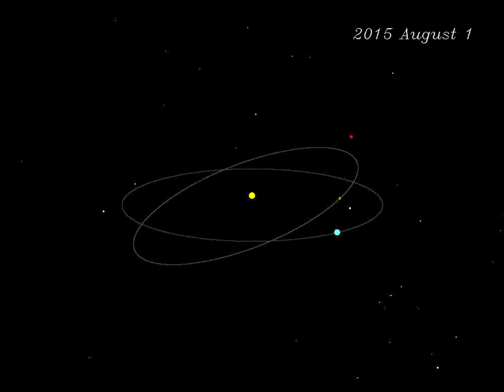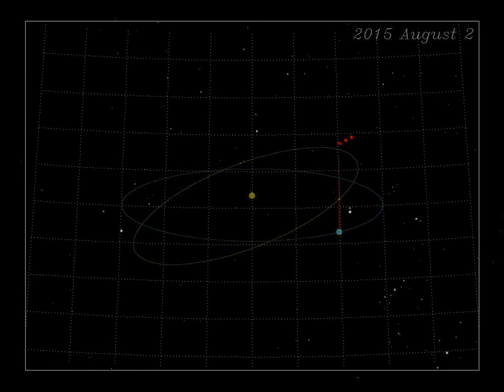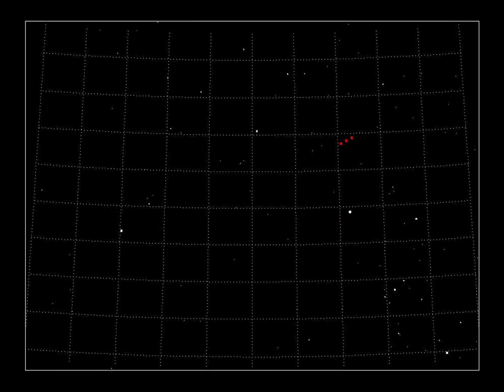By the next day, both objects will have moved along their orbits, putting the asteroid in a slightly different position on the sky. After another 24 hours, more motion, and another new position. Knowing the orbital elements, we can map the asteroid's position and calculate exactly where in the sky it would be at any time in the past or future.